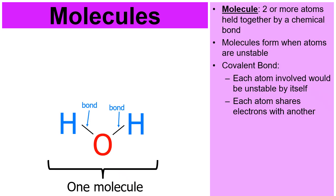I'm going to try to diagram how that happens. One dash represents two shared electrons. Watch the dashes — those two dashes represent two electrons each. The red belongs to oxygen, the blue belongs to hydrogen, but they're going to share these electrons, as we're going to see when we diagram it.